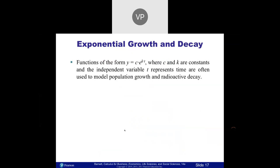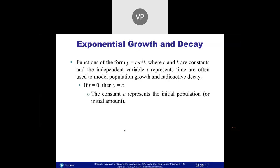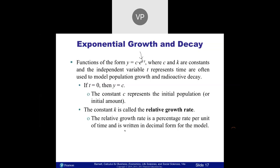If you put a number in front of e^x, it's going to affect it by stretching it upward. If you put a number times the power, it's going to affect it by stretching it to the right and left. Population growth and radioactive decay use these. There's a relative growth rate — that constant is what dictates how fast something grows or how fast something decays.